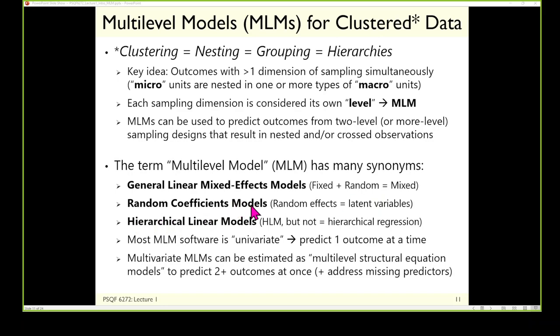These models are also called random coefficients models. Random effects are latent variables — so anything you learned about latent factors, factor analysis, or structural equation models translates directly. HLM is the most common acronym, particularly in education, standing for hierarchical linear models. There's also a software package by this name — I don't use it, it's a Windows-based program. Note that this is not the same as hierarchical regression, which refers to entering predictors in sets. That's a different concept and is fundamentally a univariate style of analysis.